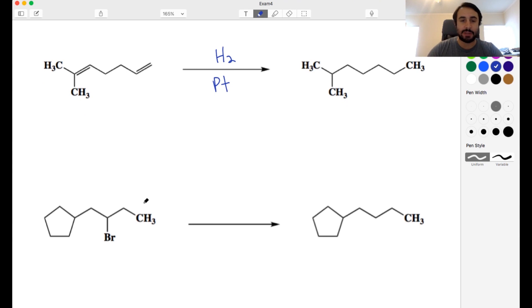Now looking at this one we have something a little bit different. We have a halo alkane and we're going to the alkane so we want to get rid of this halogen atom, we want to get rid of that bromine. So what are we going to do? Well we can't do any substitution that would just put another functional group there.